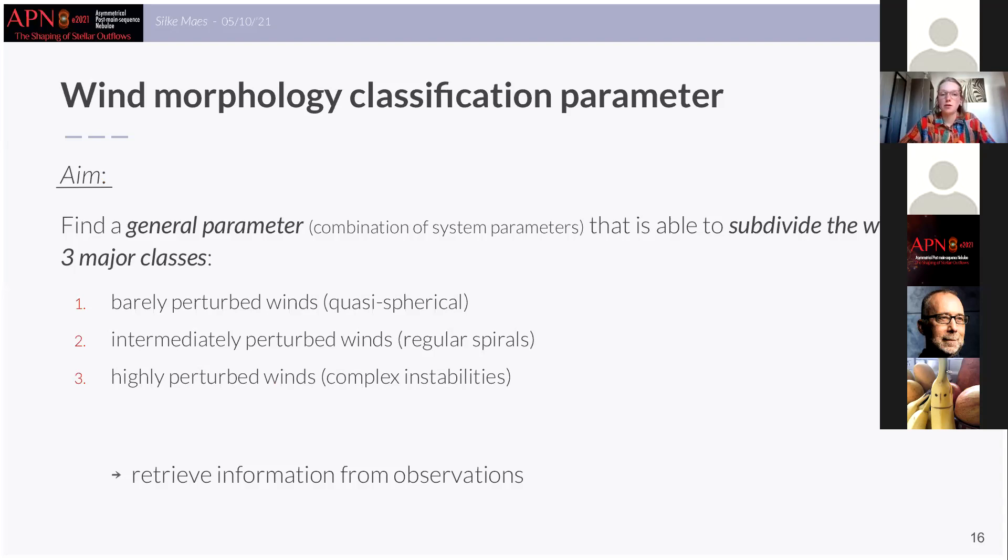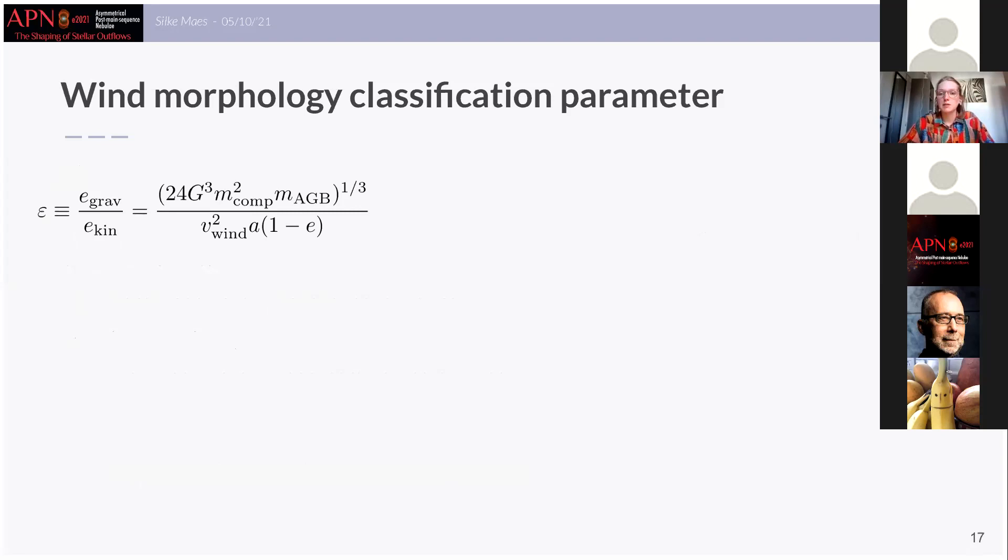So now we aim to find a parameter which is also able to make the same classification but based on a certain value, and then once such a parameter is found it can be used later to help retrieve useful information from the observations about the parameters of the observed system. Now after applying different parameters to our models, some of which we have found in the literature that have been used for classification before, we came to the conclusion that this parameter shown on the slide is able to give an accurate classification. So this parameter, we call it epsilon, is the ratio of the gravitational energy density of the companion to the kinetic energy density of the wind and it therefore is composed of the main parameters of the HB system.